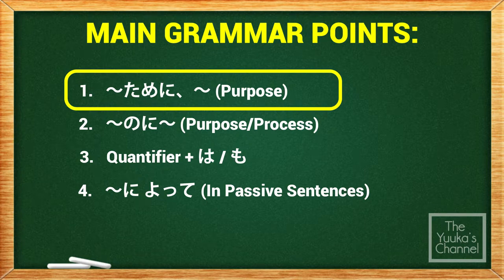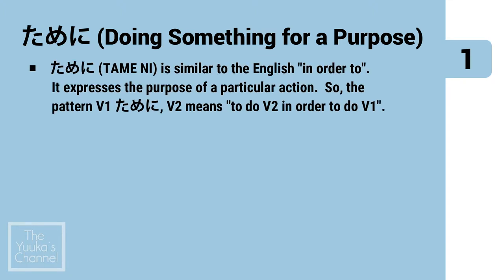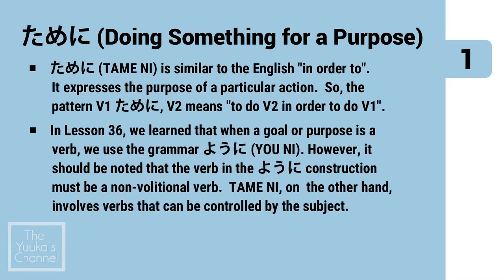First topic: tameni. Tameni is similar to the English 'in order to.' It expresses the purpose of a particular action. The pattern — verb 1, tameni, verb 2 — means 'to do verb 2 in order to do verb 1.' In Lesson 36, we learned that when a goal or purpose is a verb, we use the grammar yoni. However, it should be noted that the verb in the yoni construction must be a non-volitional verb. Tameni, on the other hand, involves verbs that can be controlled by the subject.